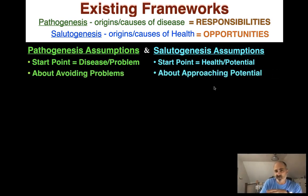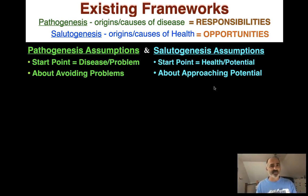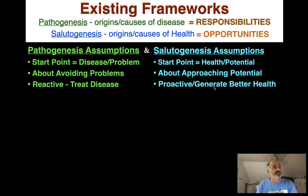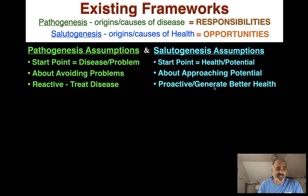Pathogenesis is about avoiding and getting rid of problems, and if you think about it beforehand, it's about avoiding risk factors. Salutogenesis, on the other hand, is about approaching a new potential — something that would not be possible otherwise, or just possible from eliminating a problem. Pathogenesis is a reactive issue: you're reacting to disease or a problem. That results in nothing bad happening, which is good — but we really want better. That's why salutogenesis is proactive, to generate better health that would not be possible otherwise.